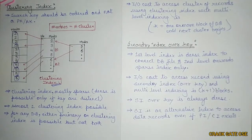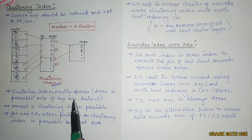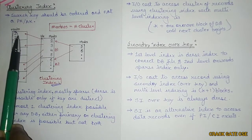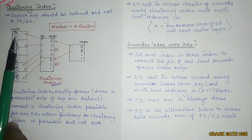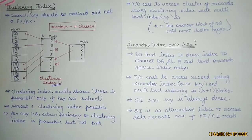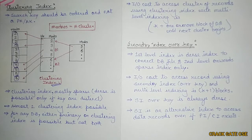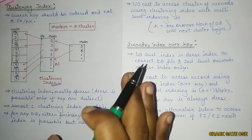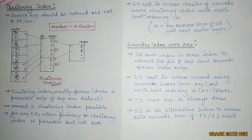Clustering index is mostly sparse because if you're dealing with clusters, it is sparse by nature. Dense clustering is only possible if each cluster has exactly one value, meaning all values are distinct. At most one clustering index is possible for any database. Either there will be a primary index or a clustering index — both cannot exist simultaneously.